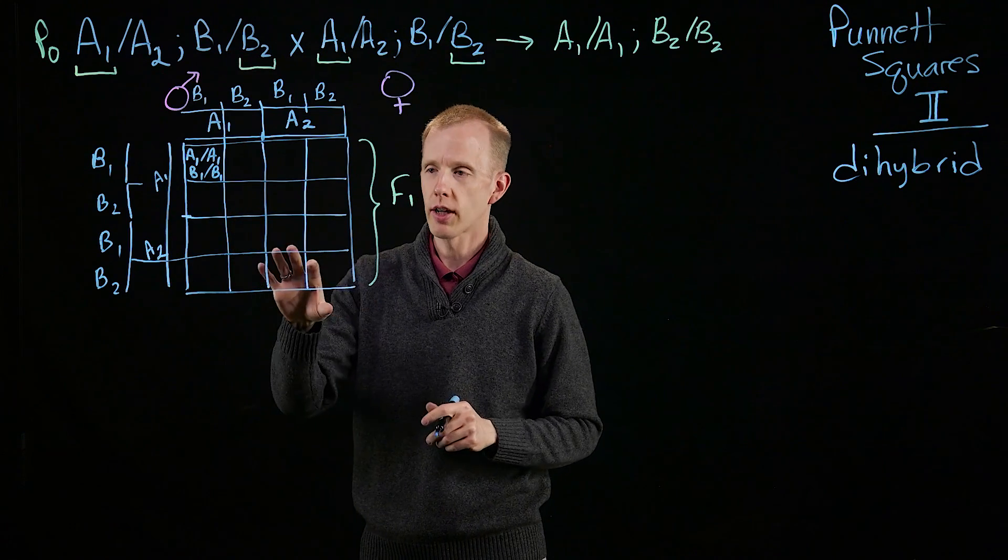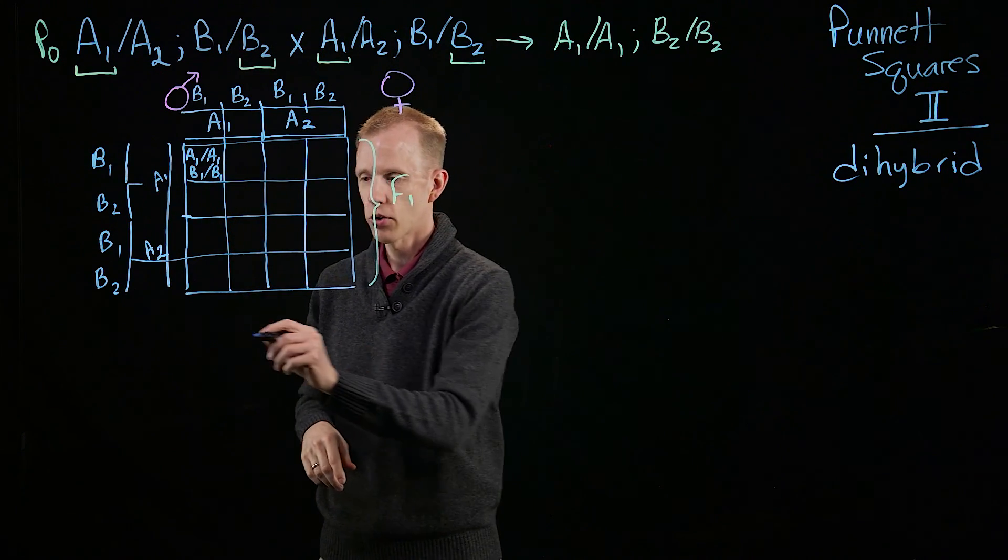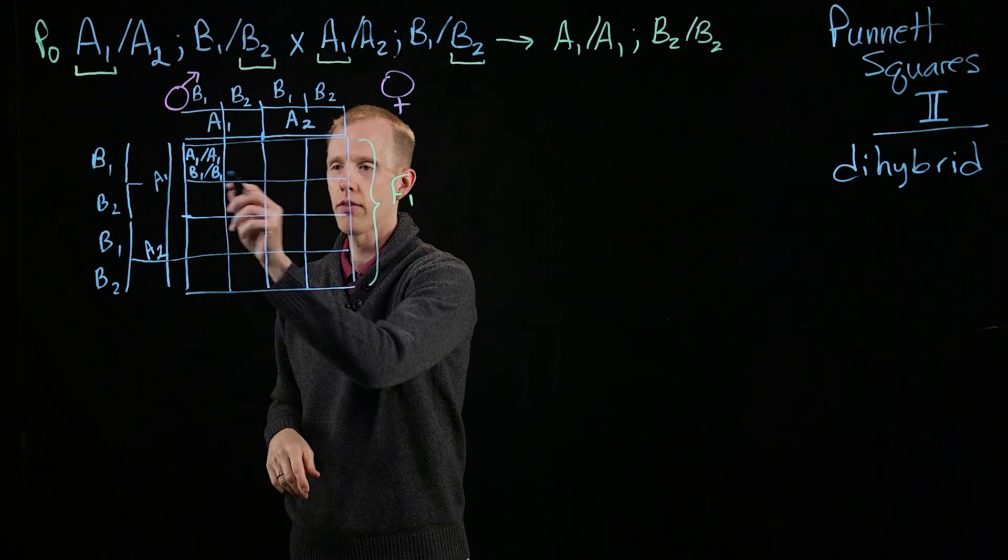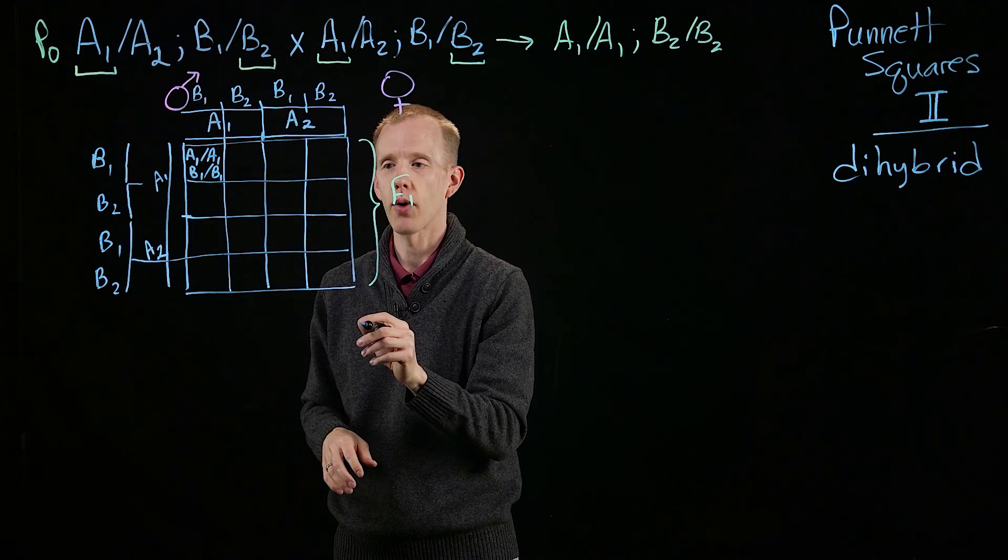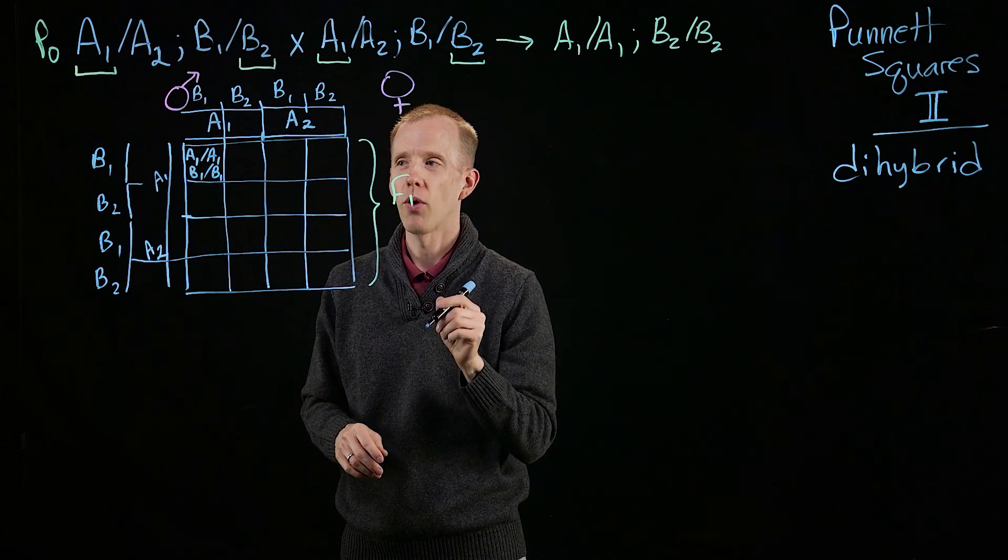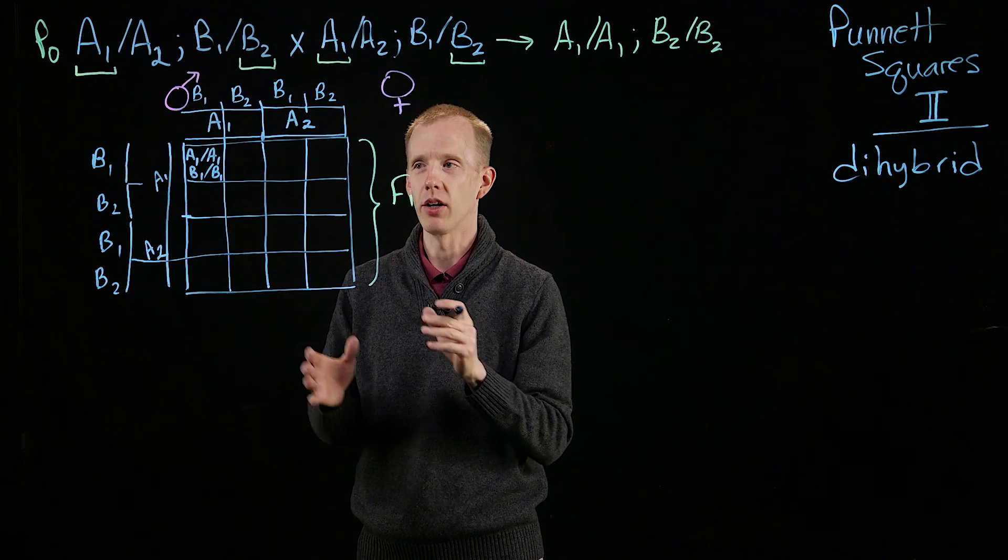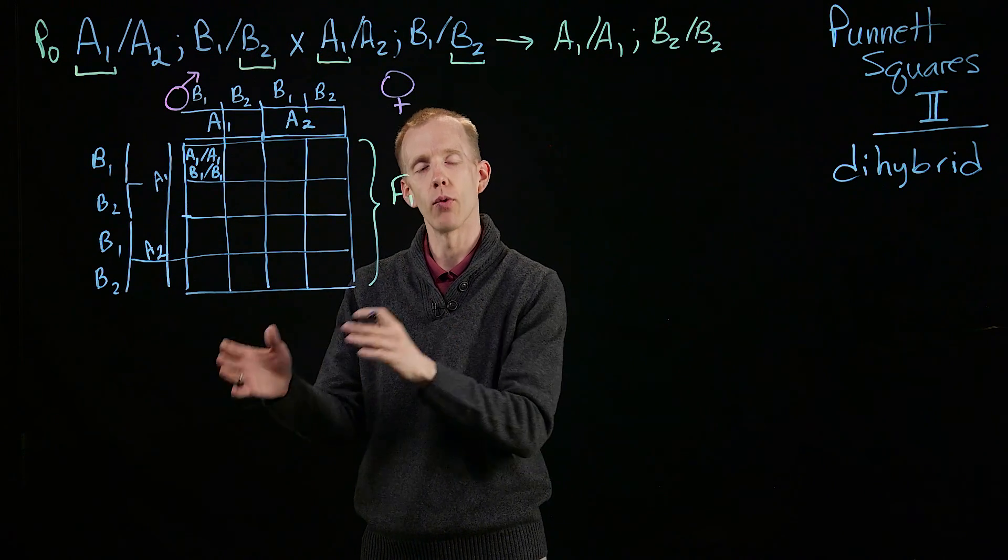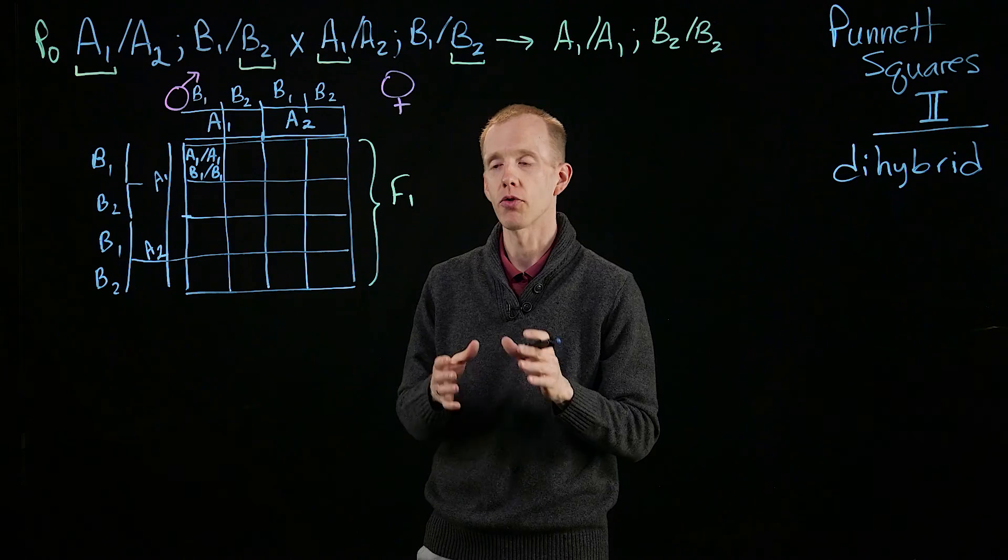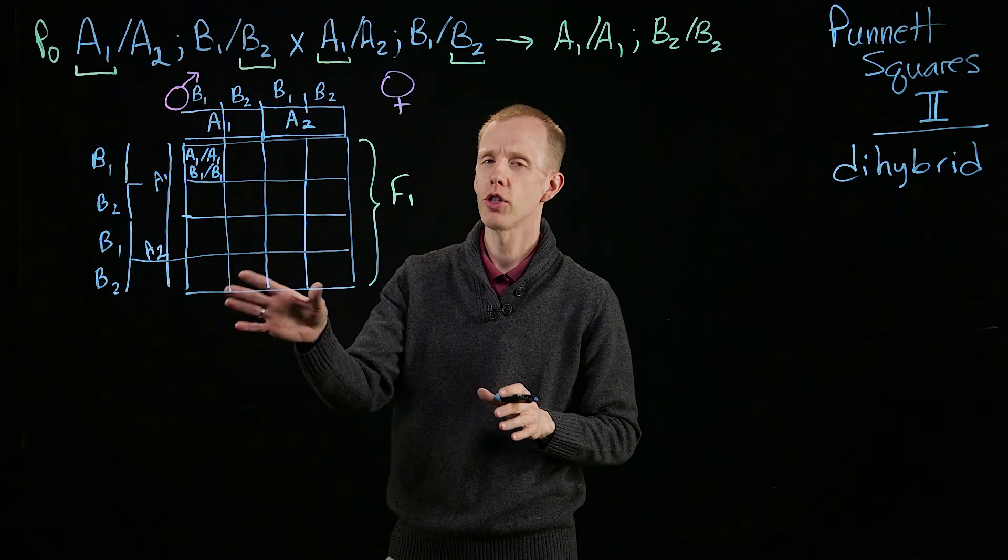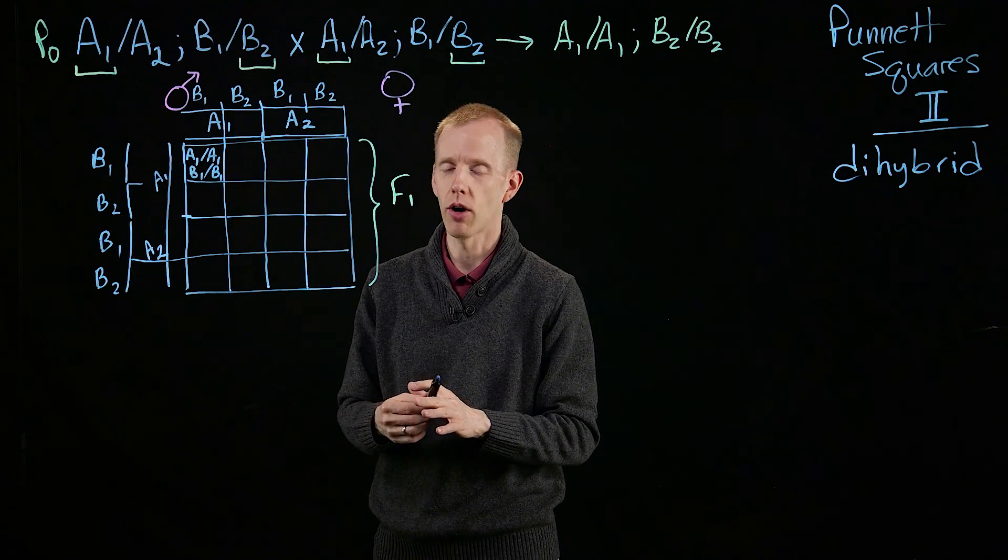Fill out all the genotypes of the F1s, and then create the ratio. Look at all of the different genotypes in these 16 squares, and figure out what the ratio is between all of those different genotypes. Like we had 1 to 2 to 1 genotype ratios for a monohybrid cross. What are the genotype ratios for the dihybrid cross?